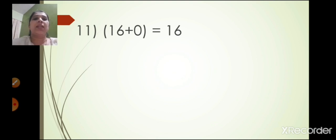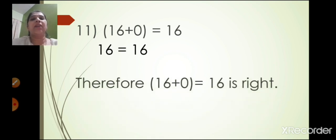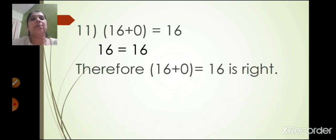The eleventh one: 16 plus 0 is equal to 16. Now 16 plus 0 is 16, and 16 is equal to 16. Therefore 16 plus 0 is equal to 16 is right.